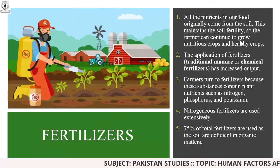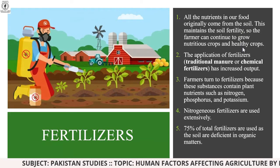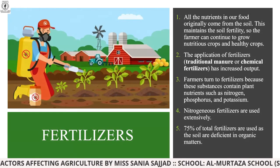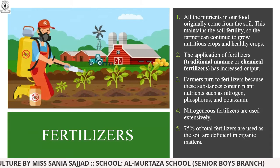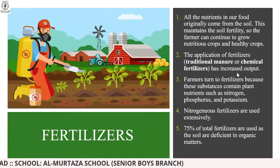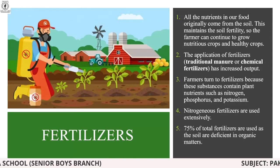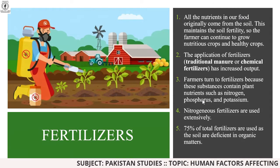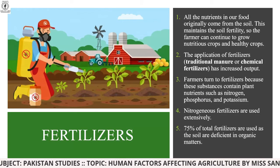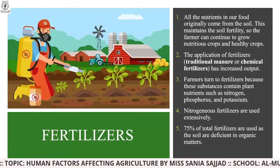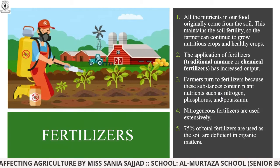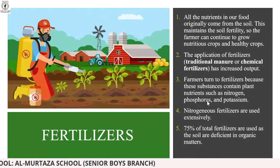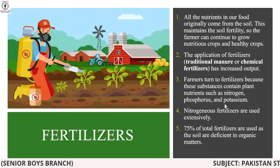Moving towards fertilizers: all the nutrients in our food originally come from the soil, which maintains soil fertility so farmers can continue to grow nutritious and healthy crops. The application of fertilizers — traditional manure or chemical fertilizers — has increased output. Farmers have turned to fertilizers because these substances contain plant nutrients such as nitrogen, phosphorus, and potassium.